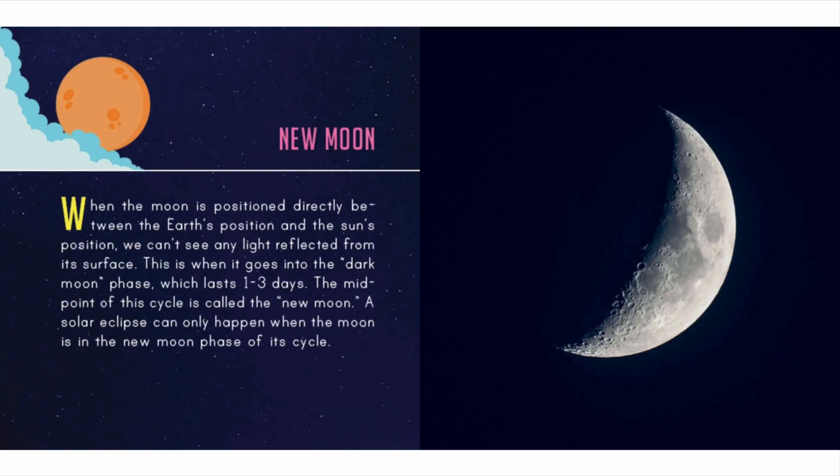New moon: when the moon is positioned directly between the earth's position and the sun's position, we can't see any light reflected from its surface. This is when it goes into the dark moon phase, which lasts one to three days. The midpoint of this cycle is called the new moon. A solar eclipse can only happen when the moon is in the new moon phase of its cycle.